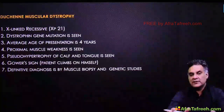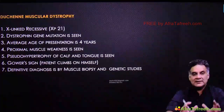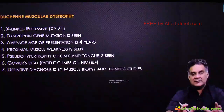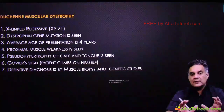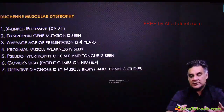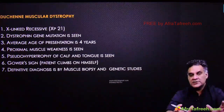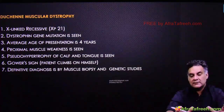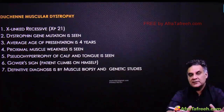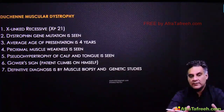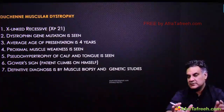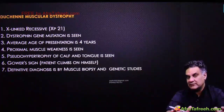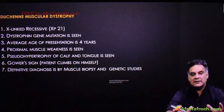Duchenne muscular dystrophy is an X-linked recessive disorder. There is a mutation in the dystrophin gene, one of the largest genes in the human body. Average age of presentation will be less than five, classically four years.